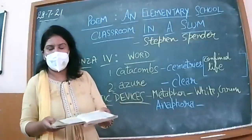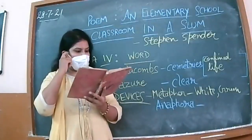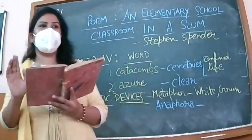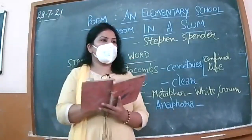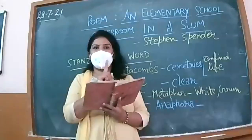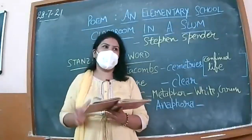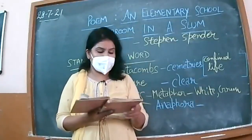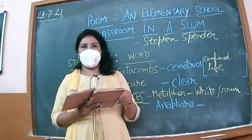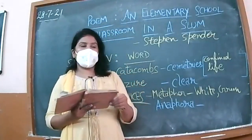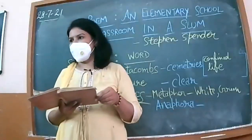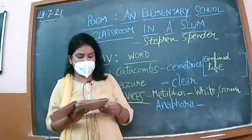These are the poetic devices we have covered. Now, what are the themes of this poem? Number one: social inequality and injustice. Number two: condition of slum children. Number three: lack of quality education, or you can say the education system. Number four: the political system of our country. And number five: lack of opportunities for all — which is also social injustice.